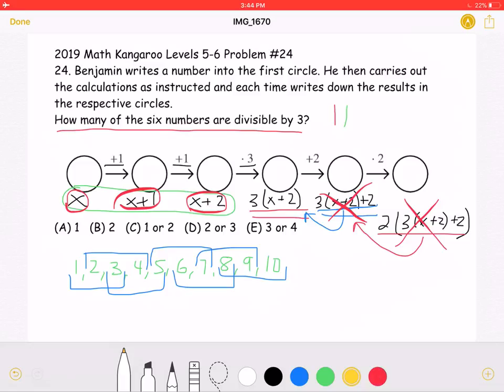That means that we have a total of 2 numbers that are divisible by 3. This is answer choice B.